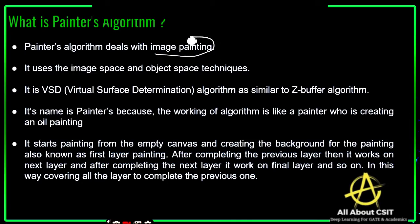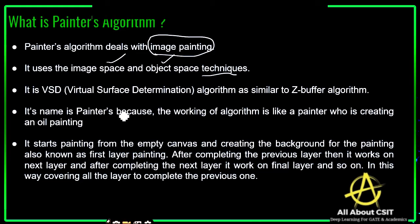The painter's algorithm deals with image painting. It uses both image space and object space techniques. We need to identify which objects are present in the view, whether they are overlapped, and in what order they should be painted. It is a virtual surface determination algorithm — we call it VSD — which is similar to the Z-buffer algorithm.